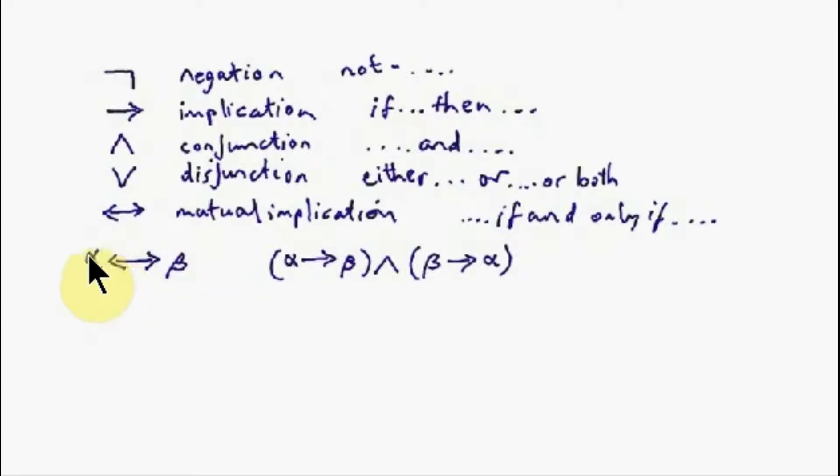I suggested that the WFF alpha mutual implication beta could itself be defined as two conjoined WFFs: alpha implies beta and beta implies alpha. Now, mutual implication means, if we have alpha mutually implies beta, it means in English alpha if and only if beta. If and only if is not a phrase that occurs often in normal English, and it may take a little while to think about what it actually means, but this gives us an easy way to understand. Alpha if and only if beta means alpha implies beta and beta implies alpha.